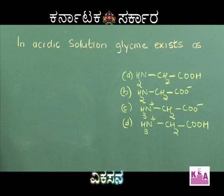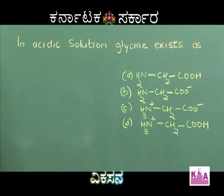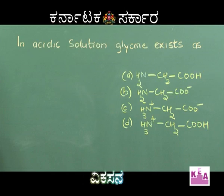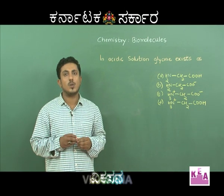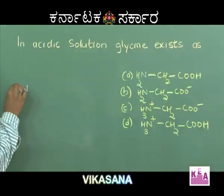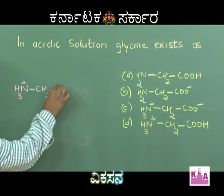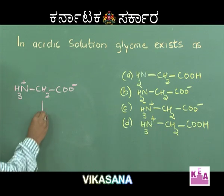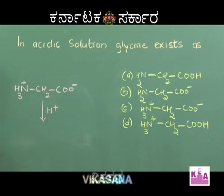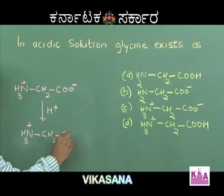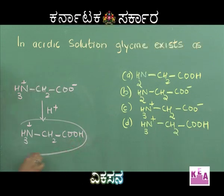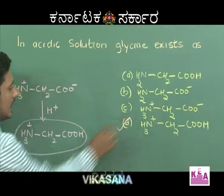In acidic solution, glycine exists as: Option A NH2CH2COOH, Option B NH2CH2COO⁻, Option C NH3⁺CH2COO⁻, Option D NH3⁺CH2COOH. Amino acids generally exist in the zwitterion form. For glycine, the zwitterion is NH3⁺CH2COO⁻. When treated with an acidic solution, the COO⁻ group gets protonated. Hence, it converts to NH3⁺CH2COOH. This is how glycine exists in its acidic form. Hence, Option D is the right answer.